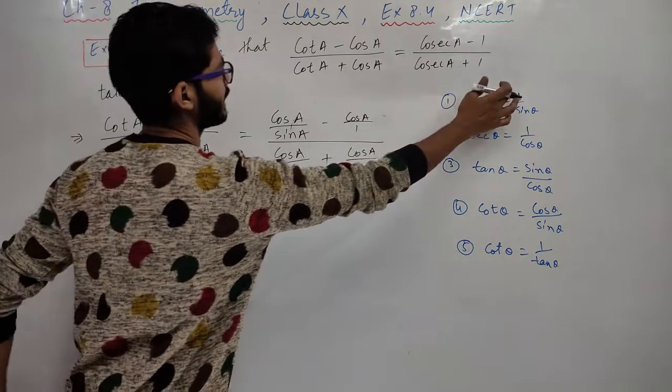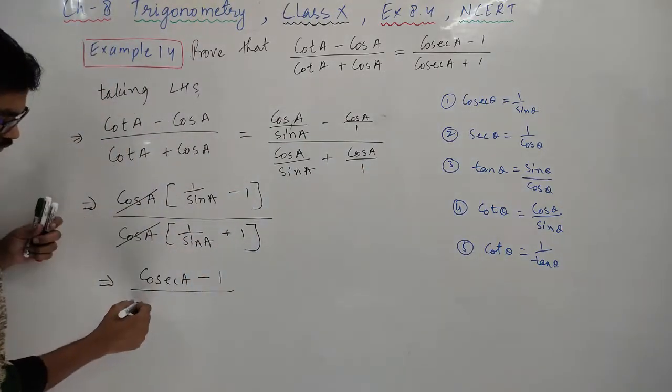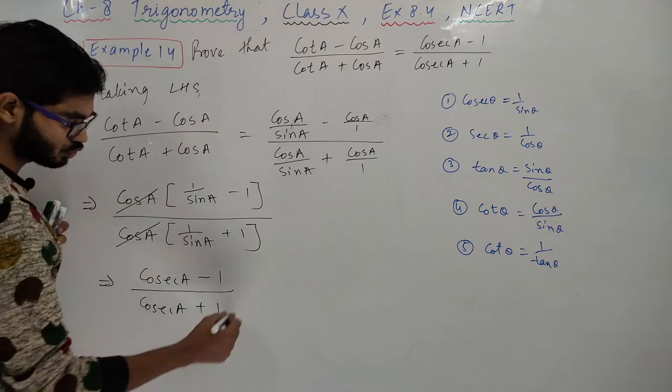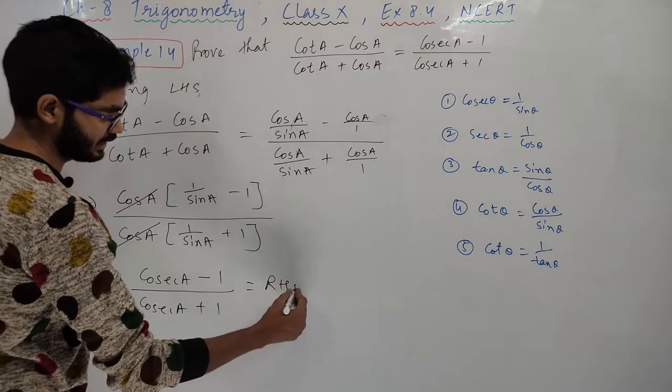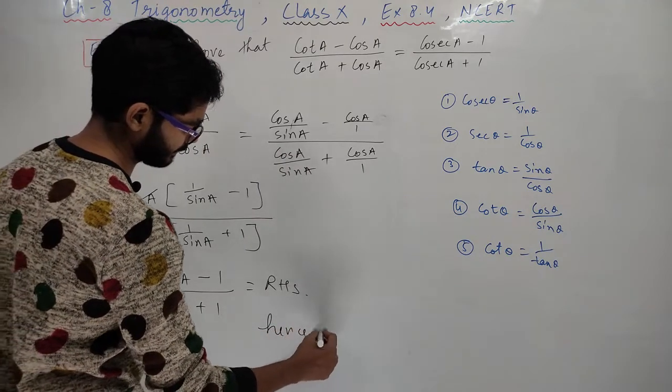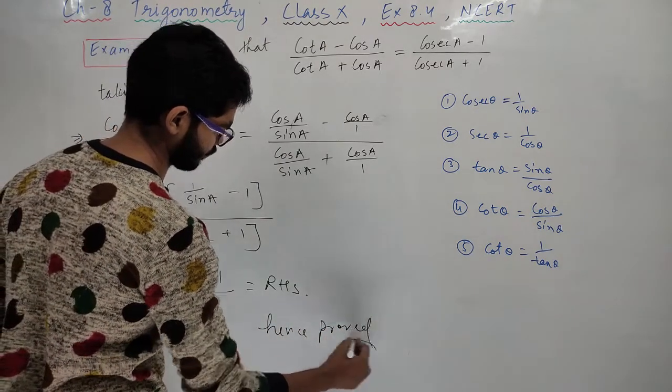Divided by, what is the formula for one over sin? Cosec. So what will come here? Cosec A. In between there is plus, so plus. Now look carefully, this has become equal to what? Right hand side. Hence proved.